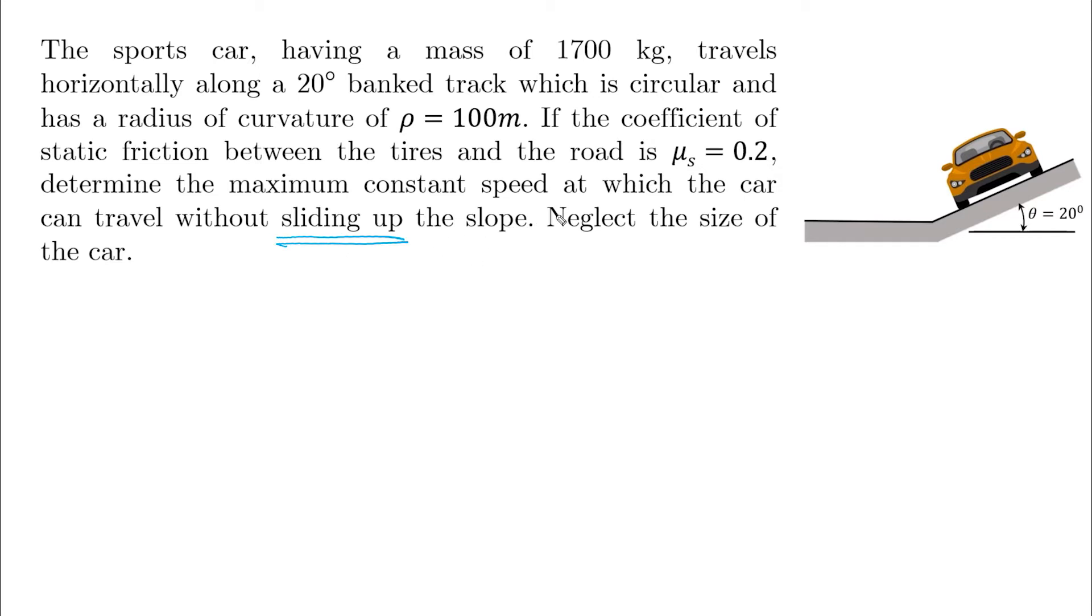Before jumping into the free body diagram we have to understand the kinematics of this problem. This car is moving in a circular track that has this radius of curvature and it is moving with constant speed. He wants us to determine the maximum constant speed, but this diagram is not helpful at all because the velocity, as we can see from this figure, is coming out of the screen or normal to the screen that you are looking at now.